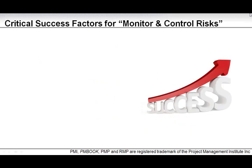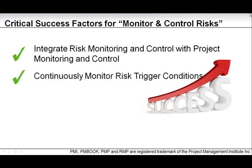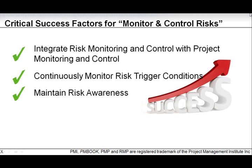The critical success factors for the monitor and control risk process are three. First, integrate risk monitoring and control with project monitoring and control. Second, continuously monitor risk trigger conditions. Third, maintain risk awareness.